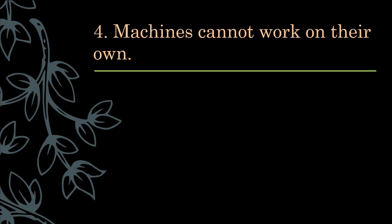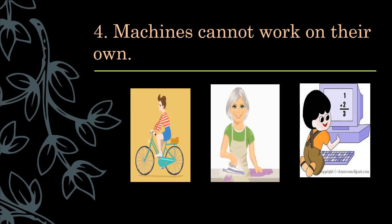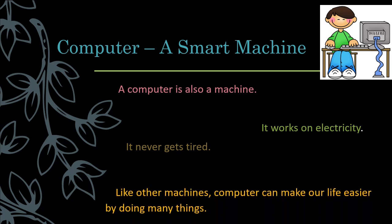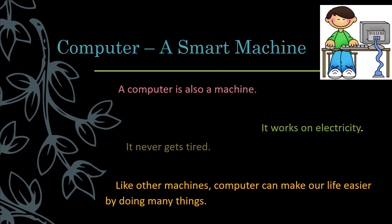Machines cannot work on their own. They work when they get orders from humans. A computer is also a machine. It works on electricity. It never gets tired. Like other machines, computer can make our life easier by doing many things.